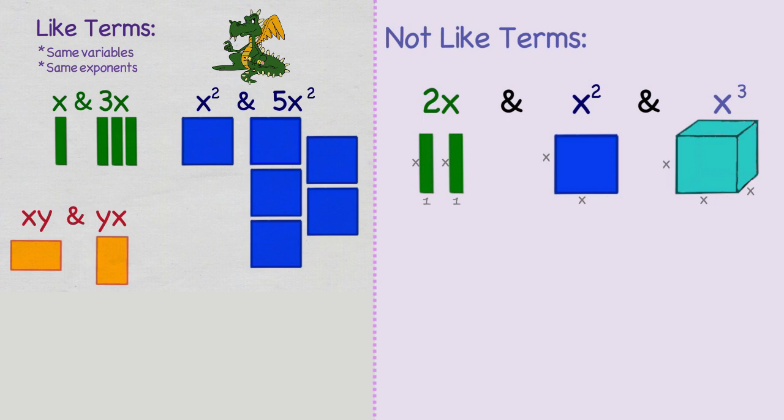Sometimes, students will get a little confused when the terms have the same variables and the same exponents. But the exponent is not associated with the corresponding variable, such as when we are comparing x squared y to y squared x.